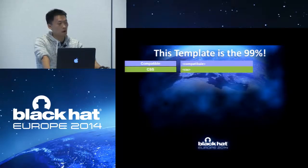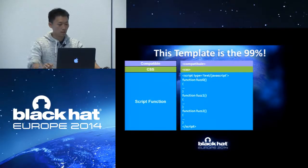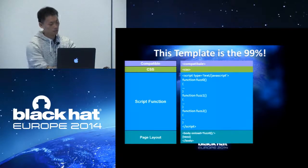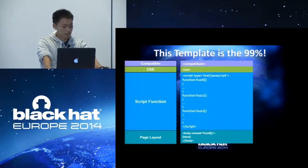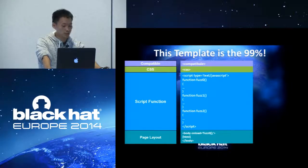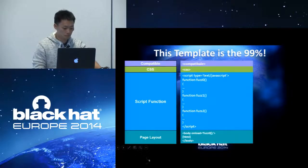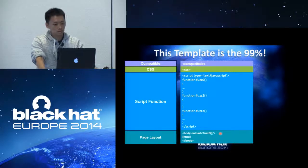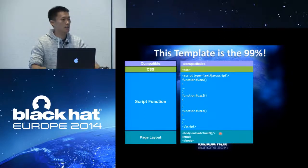Then we have the CSS part, which describes the look and formatting of a web page. Then we have a script function — here we use JavaScript — which can dynamically change the web page content. We call this the dynamic part. And at the end we have the static part, which is HTML. Usually we assign functions from the dynamic part to events of the static part. For example, here we assign a function to the onunload event, so it can be triggered while the page loads. This is the template that can cover 99% of cases.